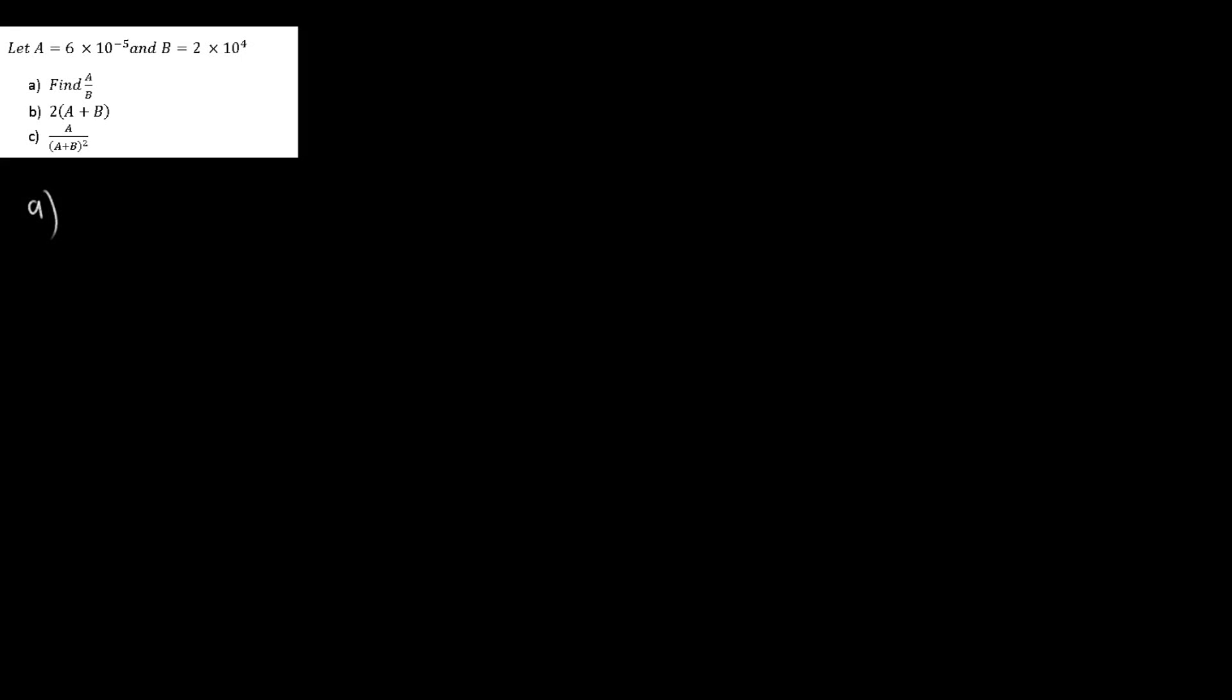Okay, let's do some IB questions. They say question A, this is some scientific notation, so question A finds A over B. Now they give us that A is 6 multiplied 10 to the power of negative 5, and B is 2 multiplied 10 to the power of 4.